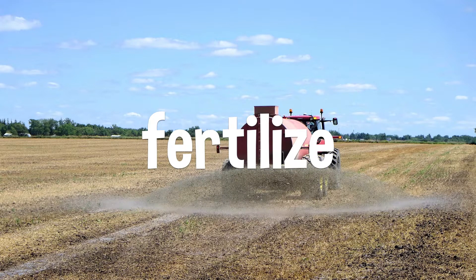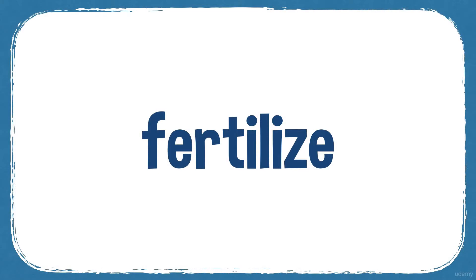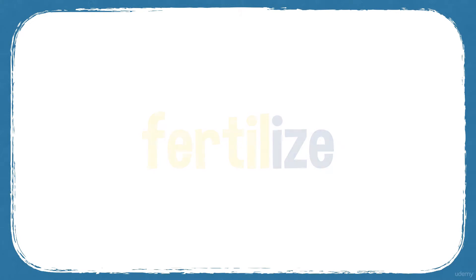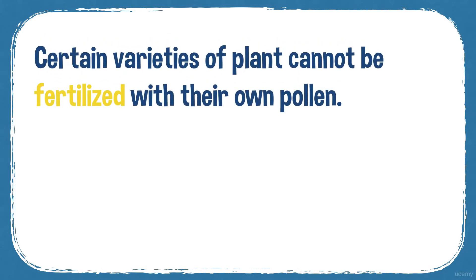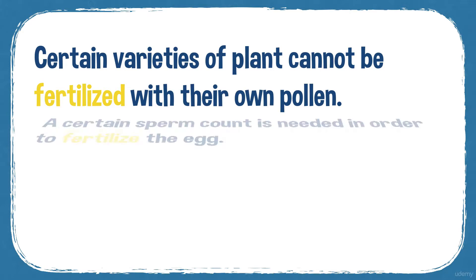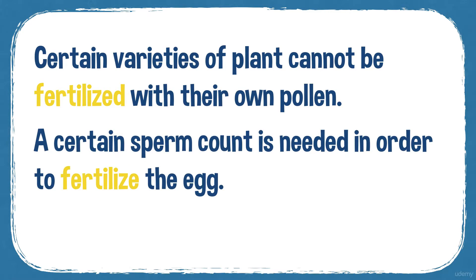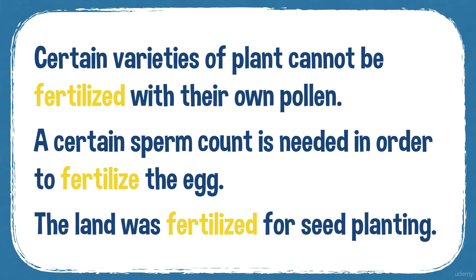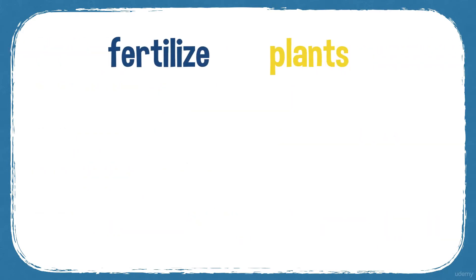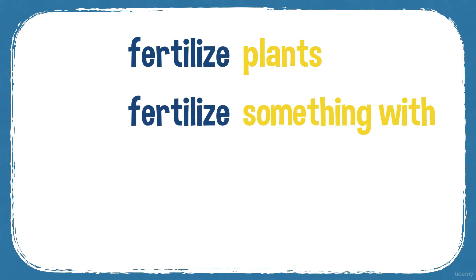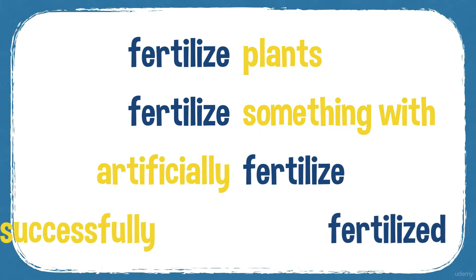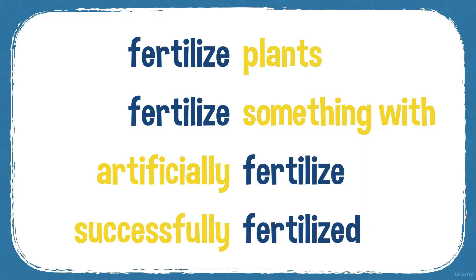Here the land on a farm is being fertilised with a chemical spray — often it's to do with getting nutrients into plants as well as creating new plants. The word comes from fertile — to fertilise something means to make it fertile. Example sentences: certain varieties of plant cannot be fertilised with their own pollen. A certain sperm count is needed in order to fertilise the egg. The land was fertilised for seed planting. You fertilise something with something else — for example, fertilise eggs with sperm. You can artificially or successfully fertilise something.